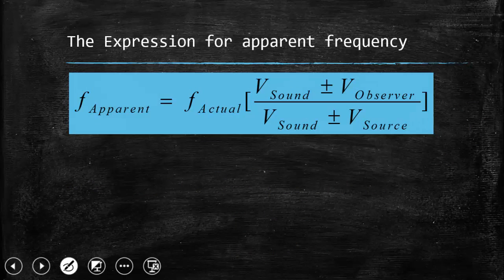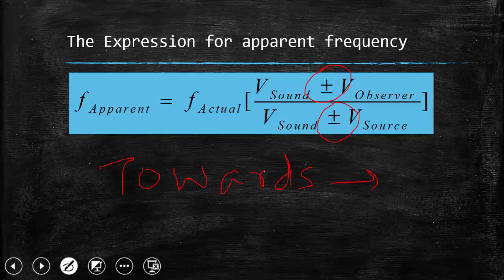This is the expression for the apparent frequency which is heard by the observer in terms of the actual frequency. Whether a plus or minus sign comes, the key concept is: towards — source moving towards observer or observer moving towards source — your frequency increases. And if it is away, your frequency decreases. So whether to put a plus sign or minus sign depends on this key rule.